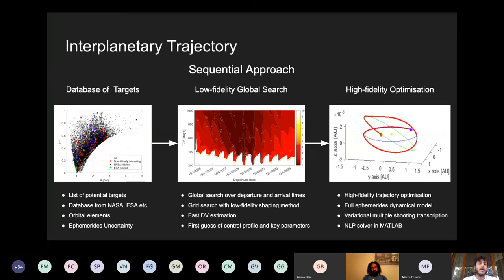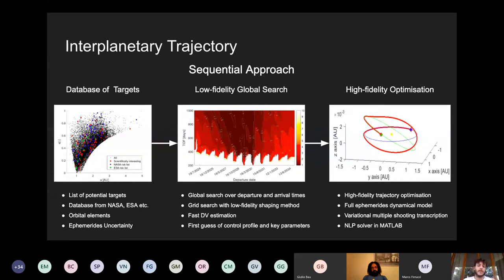The approach we selected is a sequential one. We start with the definition of a database of targets — a list of potential near-Earth objects we could flyby or rendezvous with. A strong point here is that we don't take a single database; we merge different relevant databases together and have the possibility to insert whatever object we want. We then look at the orbital elements and other key parameters such as ephemeris uncertainty, and prune our search space to the most interesting and suitable targets for our architecture.